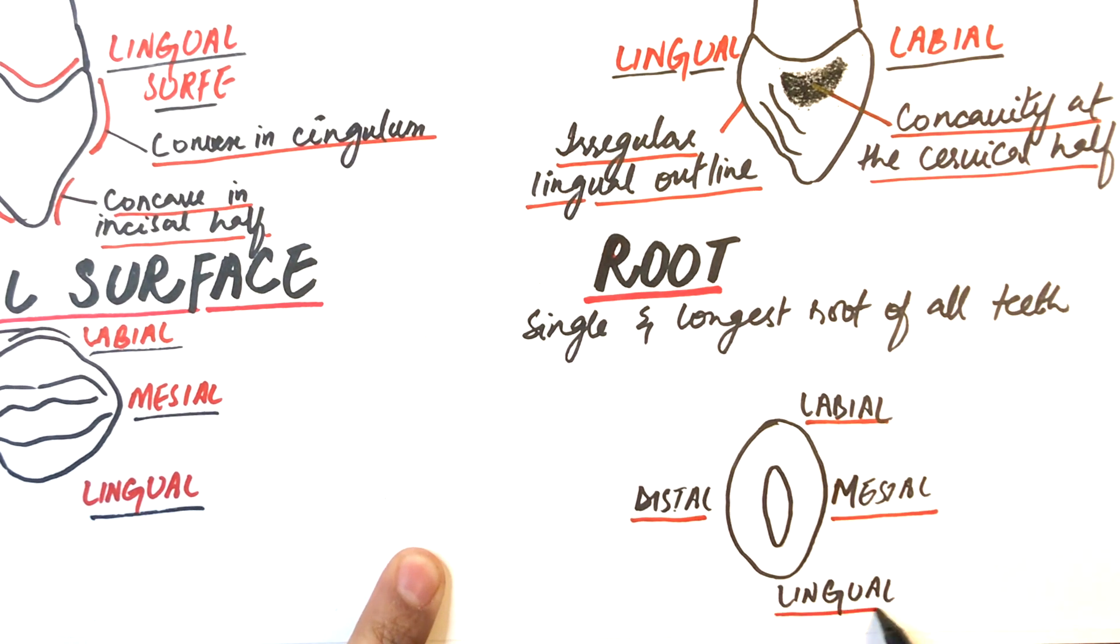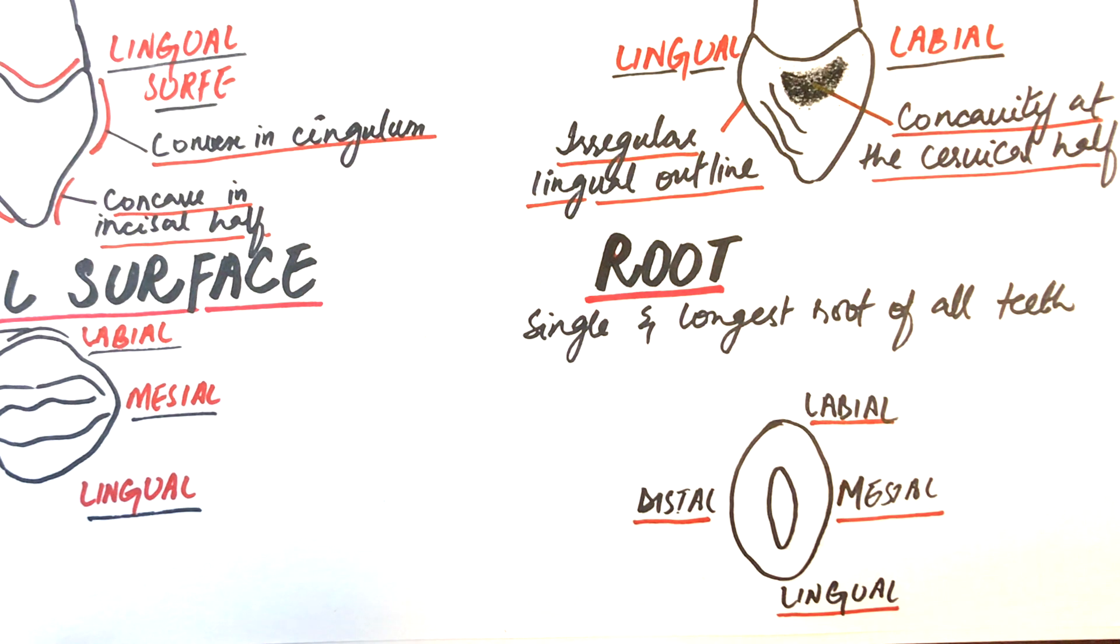On a cross section, the root exhibits mesial and distal surfaces which converge towards the lingual, hence making the labial surface of the root wider mesiodistally than the lingual surface of the root. The labial and lingual surfaces are convex while the distal and mesial surfaces are slightly convex or have flattened outlines.